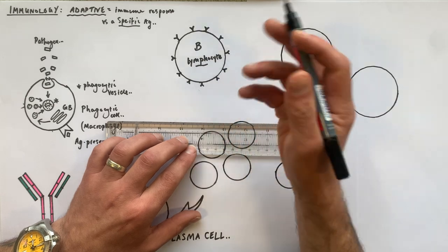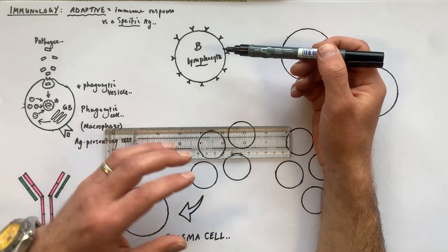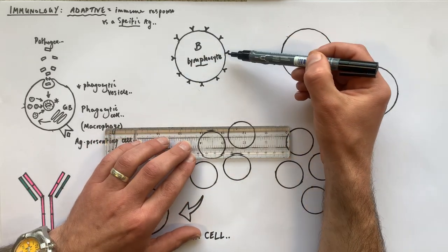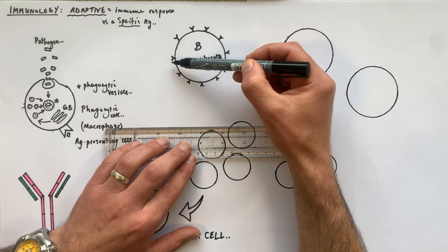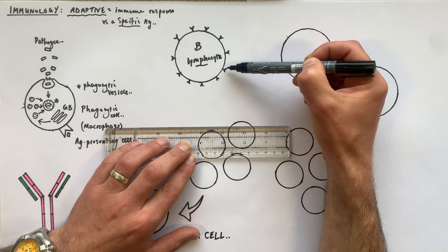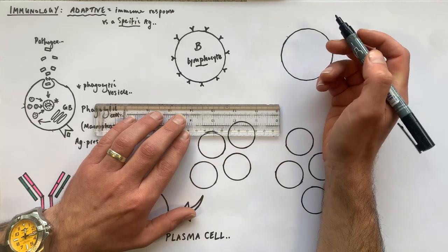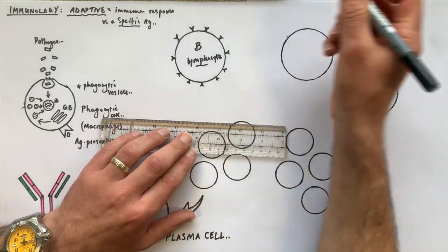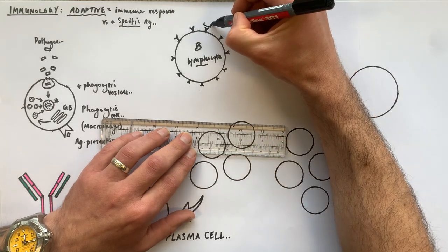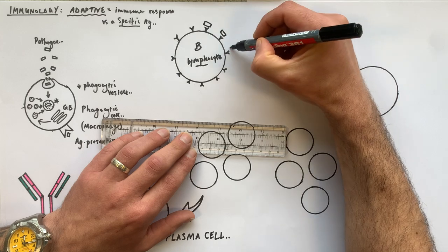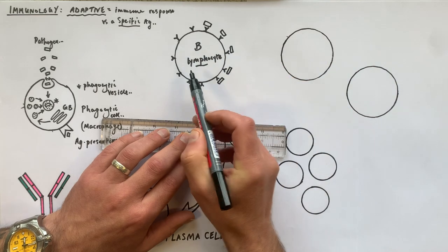We have thousands and millions of different types of B lymphocytes in our blood plasma and lymph fluid. Each B lymphocyte has a slightly different shaped antibody on its cell membrane, and these membrane-bound antibodies have exactly the same complementary shape to a certain antigen. Only one type of B lymphocyte will be able to bind a particular type of antigen on the surface of the pathogen.